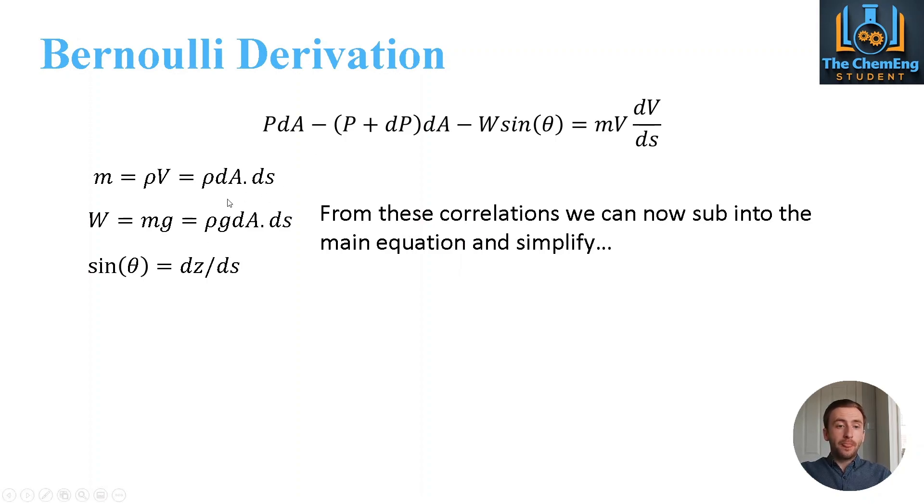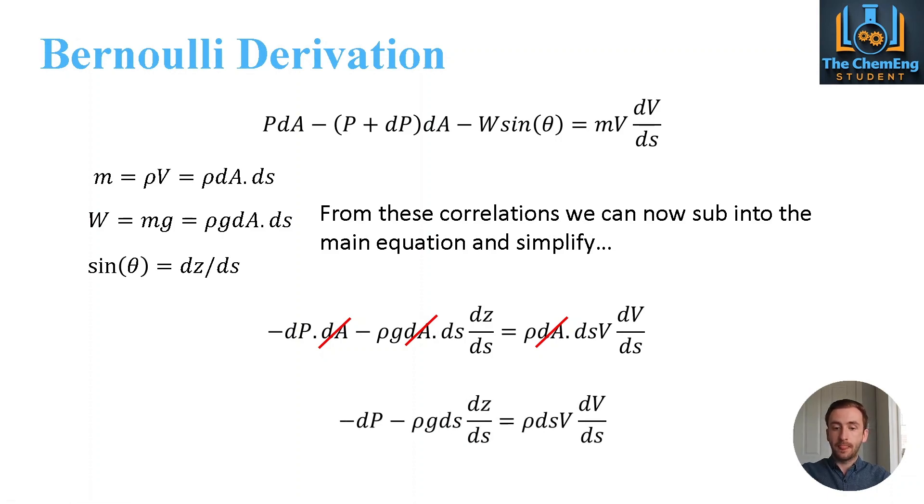So what we can now do is substitute in our respective values. And we'll pop them into the equation. Now, we can make some simplifications here because we can cancel out the dAs on all the terms. They appear exactly the same. So what we now contain is minus dP minus rho gds multiplied by dz over ds. So that's the difference in the elevation with respect to the direction. Difference in the velocity with respect to the direction.